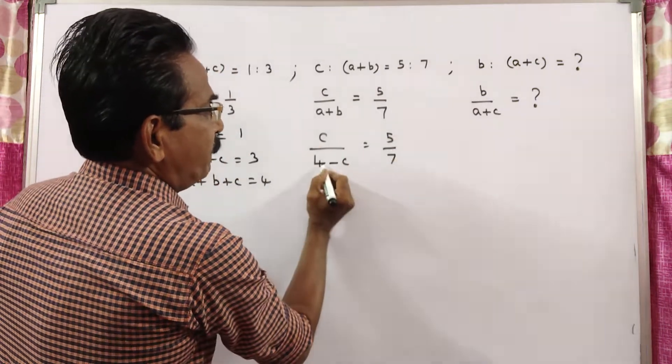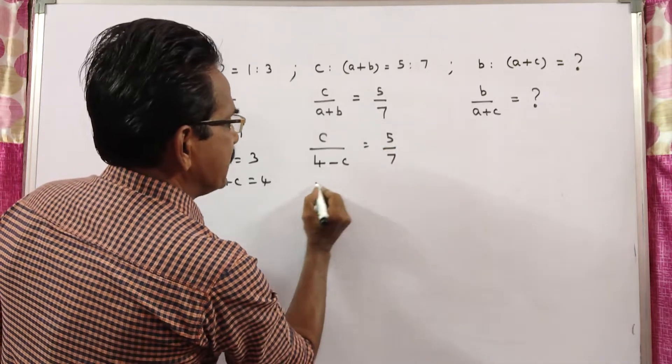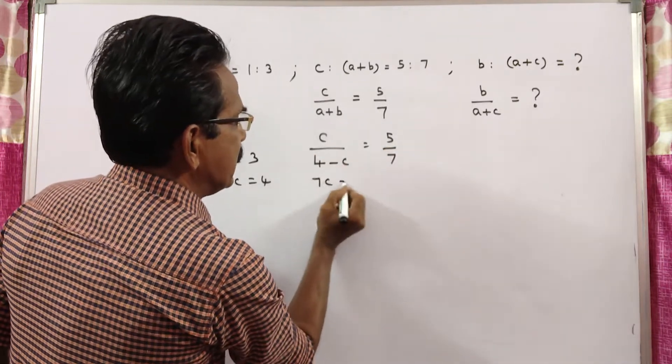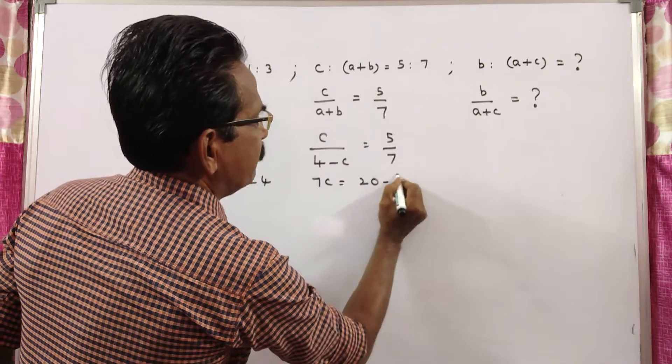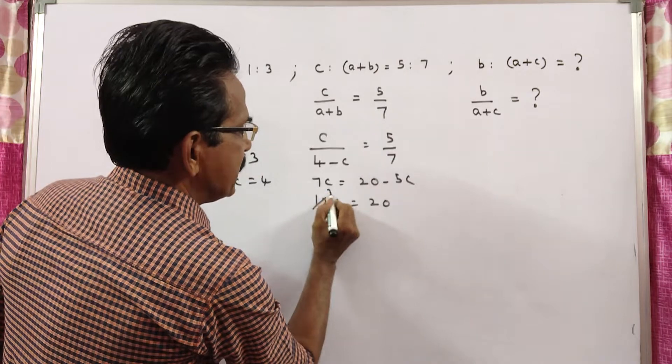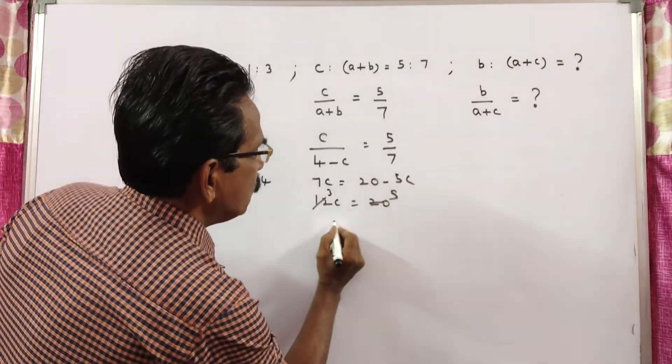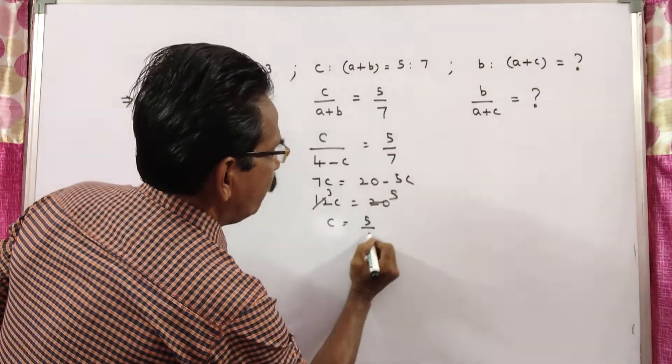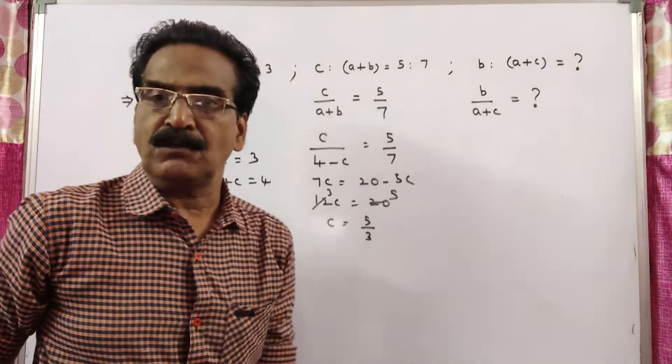So, 5 times 4 is 20 minus 5c, or 7c is equal to 20 minus 5c, 12c is equal to 20. So, c is equal to 5 by 3.